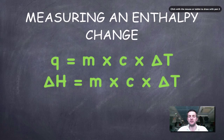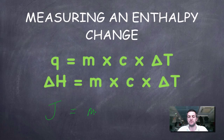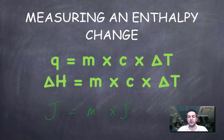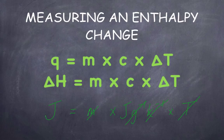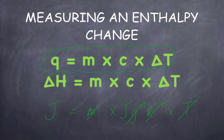By finding the heat change we're also going to find an enthalpy change. Let's just check the units work: if we have joules, and we multiply mass in grams by specific heat capacity in joules per gram per Kelvin, then by a temperature change in Kelvin, the grams cancel and the Kelvins cancel, leaving us with joules equals joules. So that makes sense.